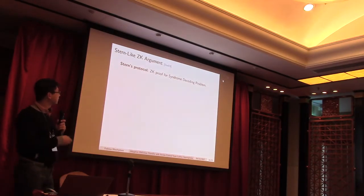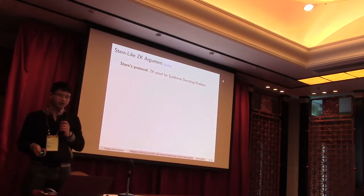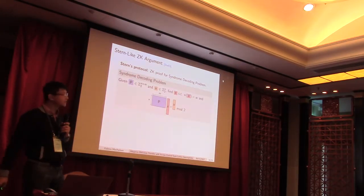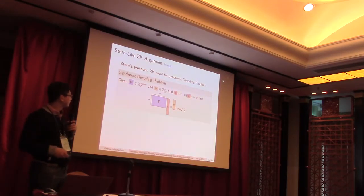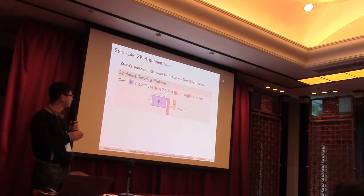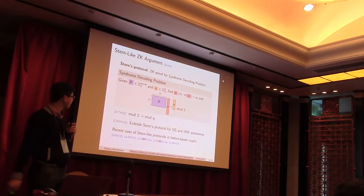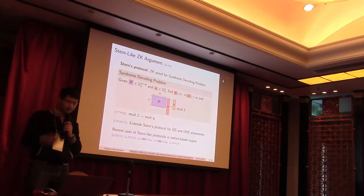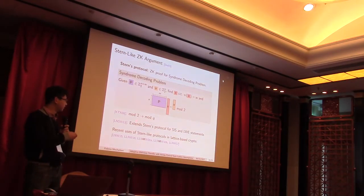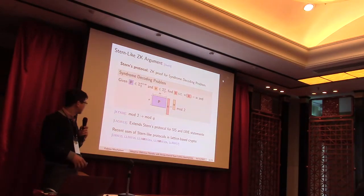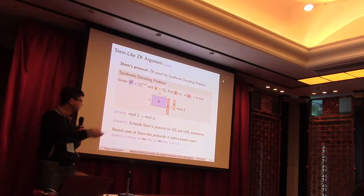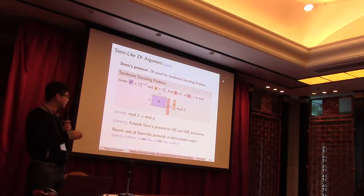So, how does it work? Initially, it was a proof for syndrome decoding problems, which is basically short integer solution, but instead of proving knowledge of short X, we prove knowledge of an X, such that its Hamming weight is fixed, and it's all in the binary setting. And some work from Kawachi and others allows to go from modulo 2 to modulo q, and other works from Ling and others allows to extend this to standard SIS and LWE statements.